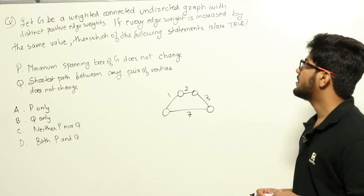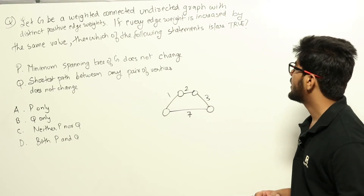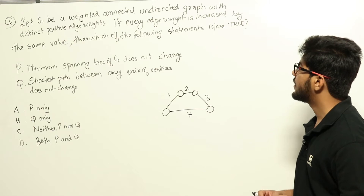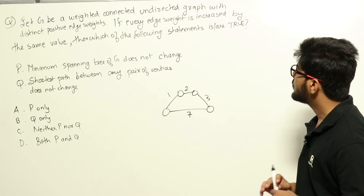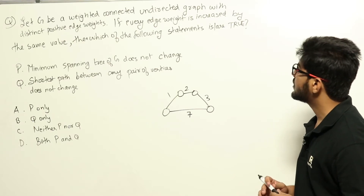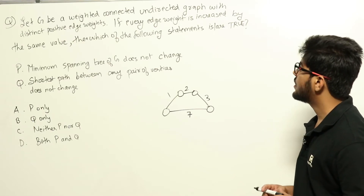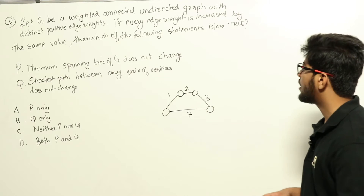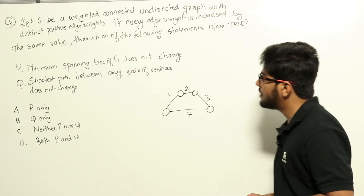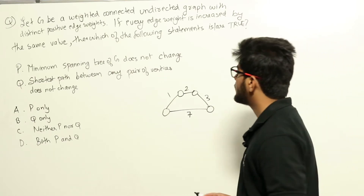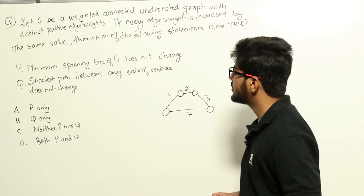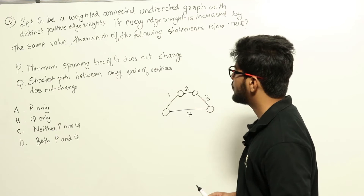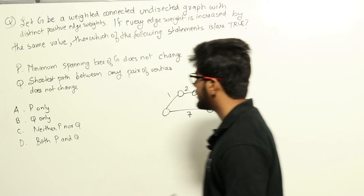Let G be a weighted, connected, undirected graph with distinct positive edge weights. If every edge weight is increased by the same value, then which of the following statements is or are true? P: minimum spanning tree of G does not change. Q: shortest path between any pair of vertices does not change.